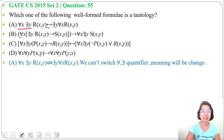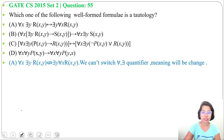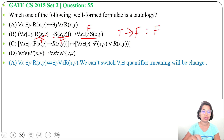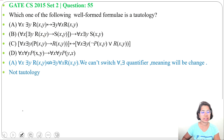Option B: 'for all x, there exists y, r(x,y) implies s(x,y)' implies 'for all x, there exists y, s(x,y)'. Suppose s(x,y) is false, then the consequent is false. If we take r(x,y) as false, then false implies false is true, but true implies false is false. As there is a possibility of false, it's not a tautology.